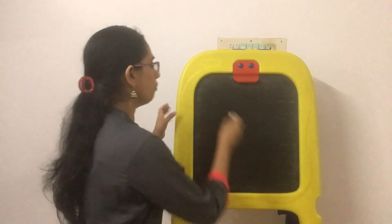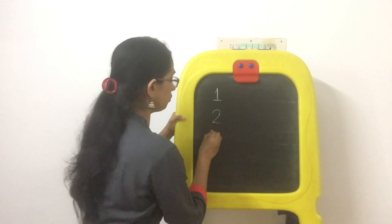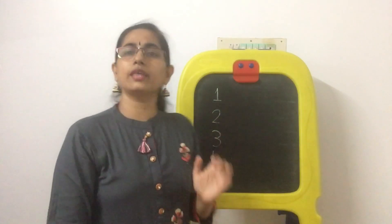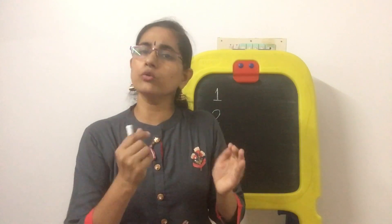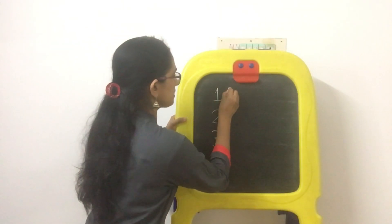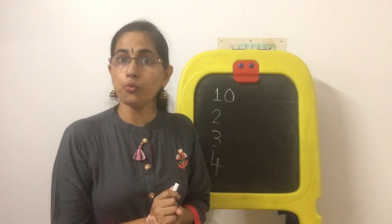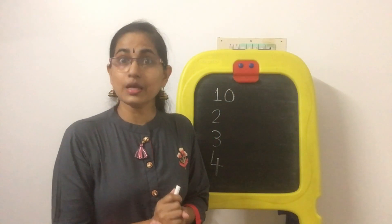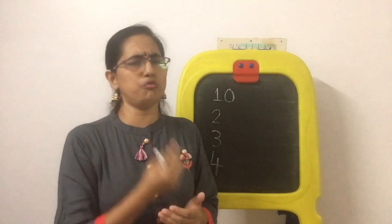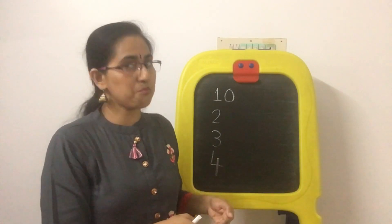Zero walked along with number one, number two, number three, and number four. Then number one said, 'Zero, why don't you come and stand after me?' Zero came and stood after one. Now what is the value? Yes, it is ten! Number one said, 'I do have a value, but when you stand along with me, my value is increased!'